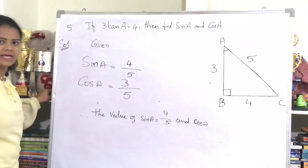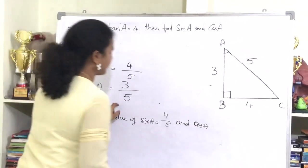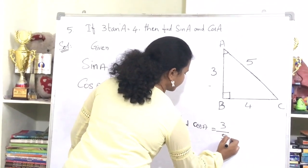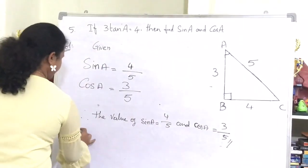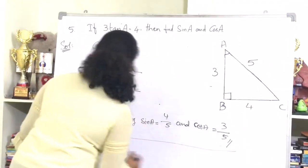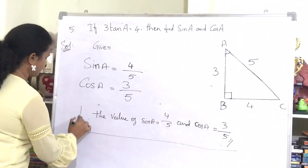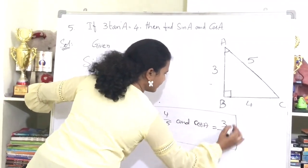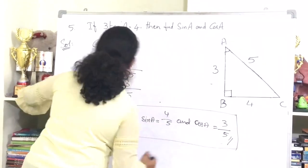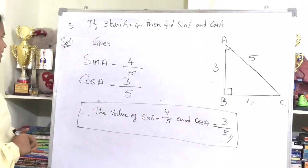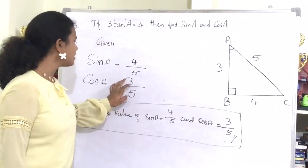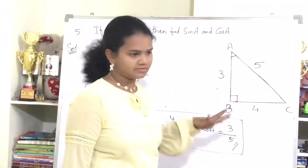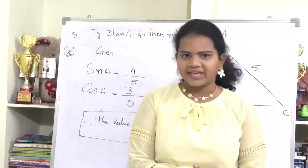Therefore, sin A equals 4 by 5 and cos A equals 3 by 5. I hope you understood this problem. Thank you.